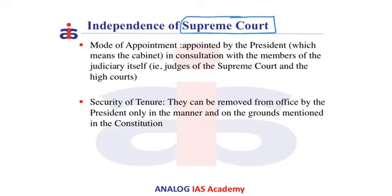The independence of the Supreme Court plays a very important role so that they can deliver justice in a proper manner. Some of the provisions of the Constitution which help in maintaining this independence are, first, the mode of appointment — the judges of the Supreme Court are appointed by the President only in consultation with the judiciary itself. Therefore, this removes any interference from the executive.